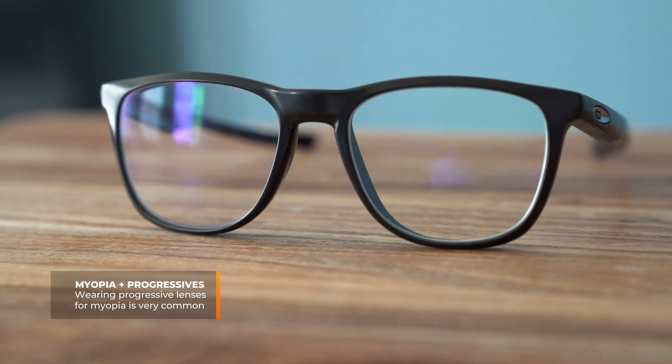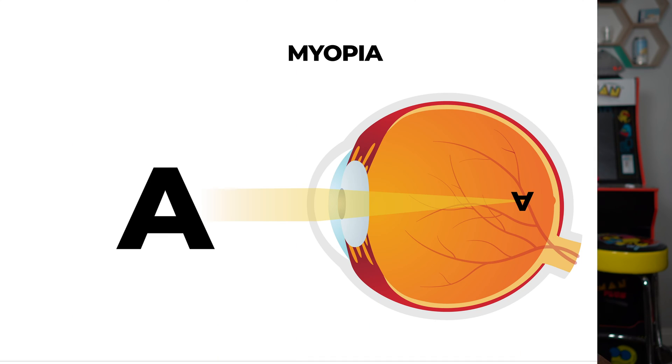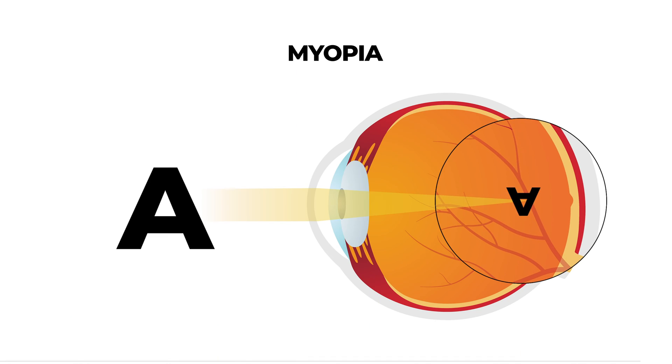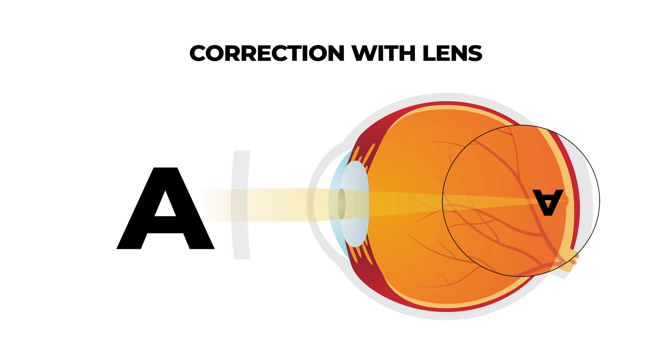This is a very common setup — progressives with myopia — as myopia is the most common correction for people who need corrective lenses. If you're wearing this combo, it also likely means you've been wearing glasses before you needed progressives, because myopia generally starts at an earlier age. People who are myopic wear glasses, and then all of a sudden can't see things up close very well, so they get progressives.